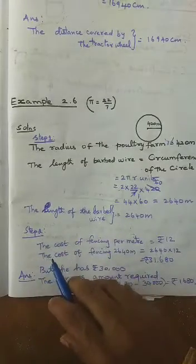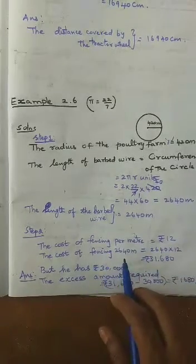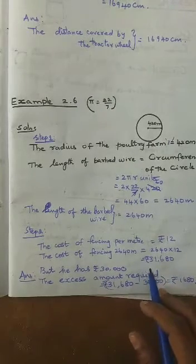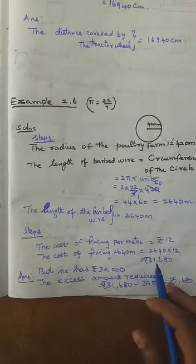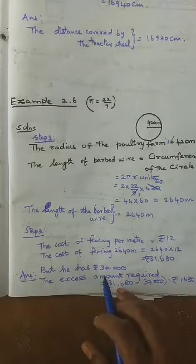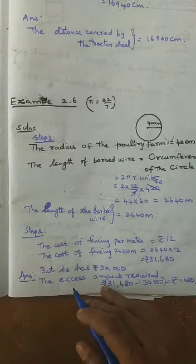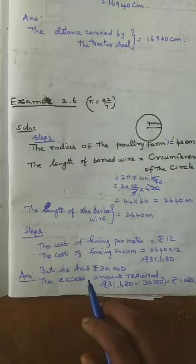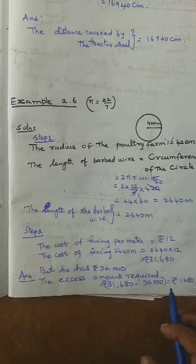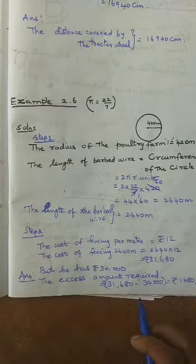Step 2: Cost of fencing per meter = rupees 12. Cost of fencing 2,640 m = 2,640 × 12 = rupees 31,680. But the farmer has only rupees 30,000. The excess amount required = 31,680 − 30,000 = rupees 1,680. So the additional amount needed is rupees 1,680.